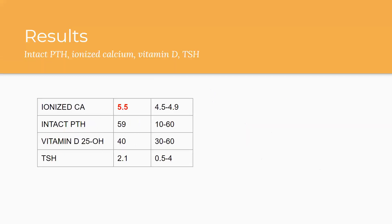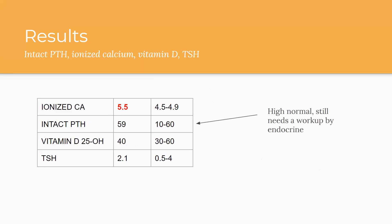Here are her results. I rechecked the ionized calcium at the same time — it was still elevated, confirming this was truly high calcium. Intact PTH came back at 59. Vitamin D was 40 — normal. TSH was normal. But note: PTH at 59 is high normal, and per the reference discussed, that still requires workup even though it's technically within the normal range.